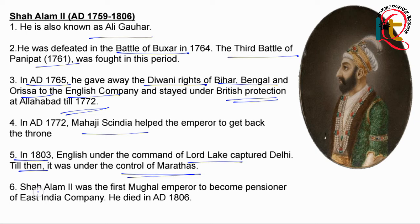The last point: Shah Alam II is considered to be the first Mughal emperor who took a pension from the East India Company. Finally, his death occurred in the year 1806. So these are quite important facts and points related to Shah Alam II.